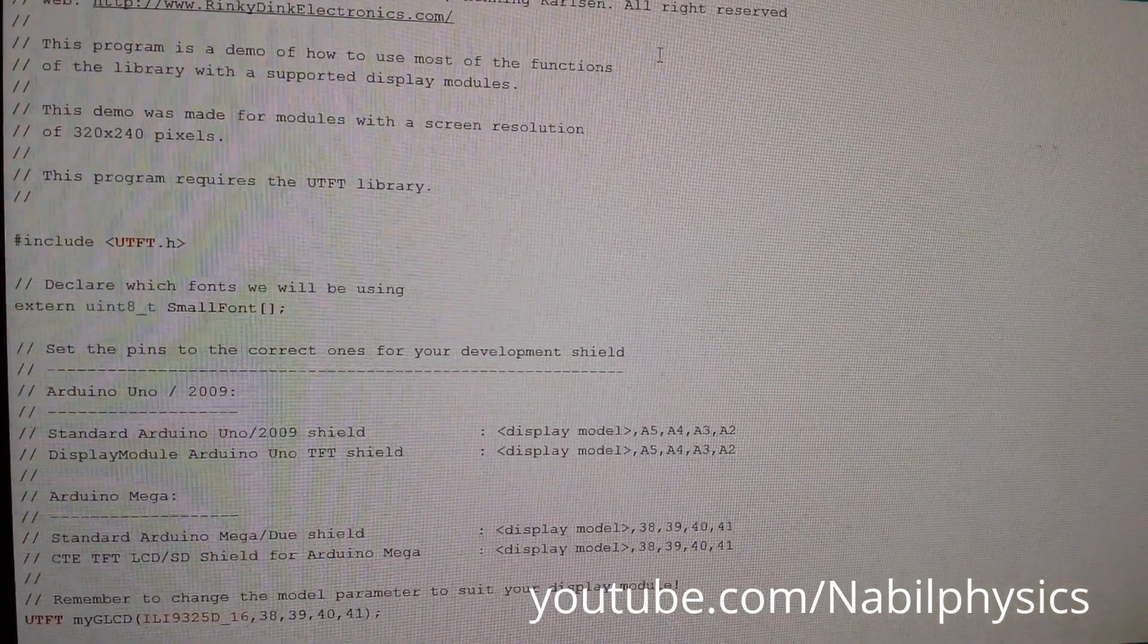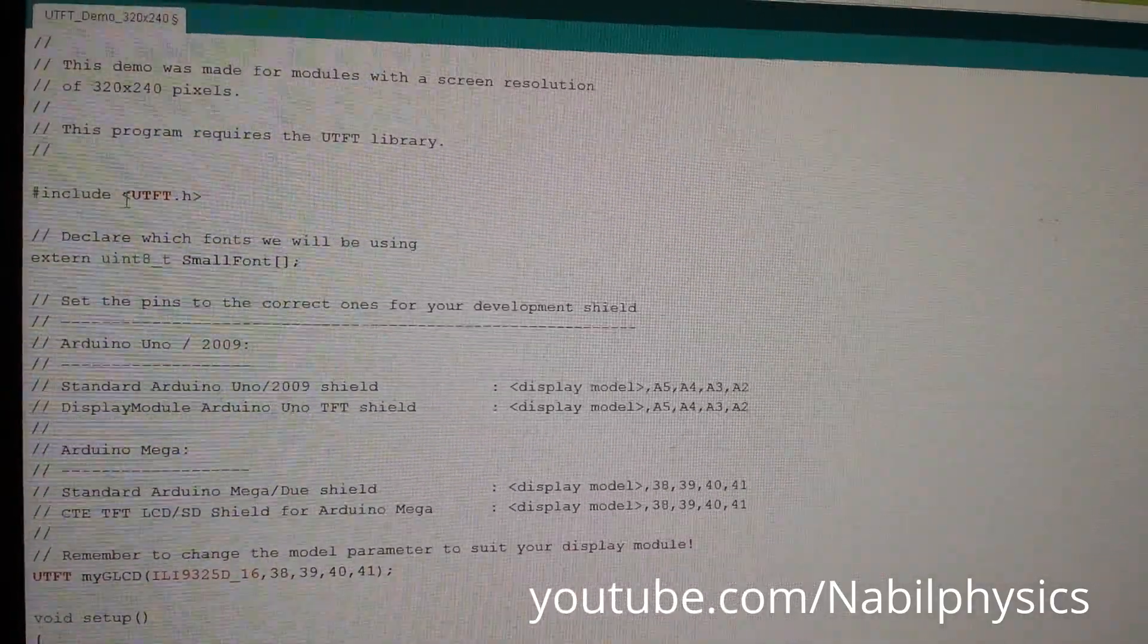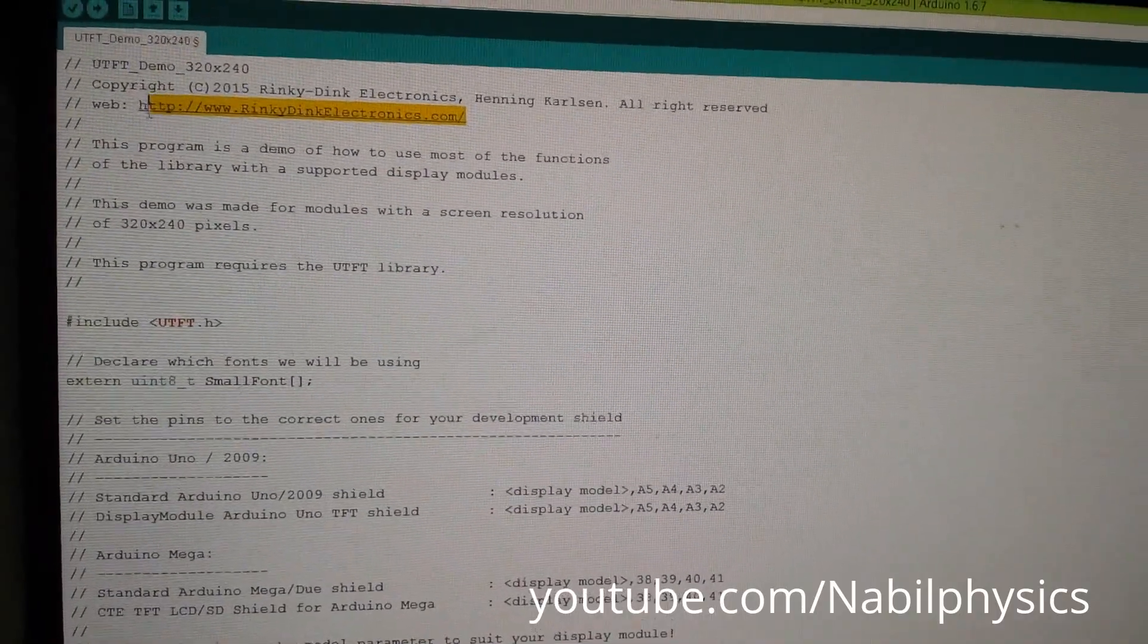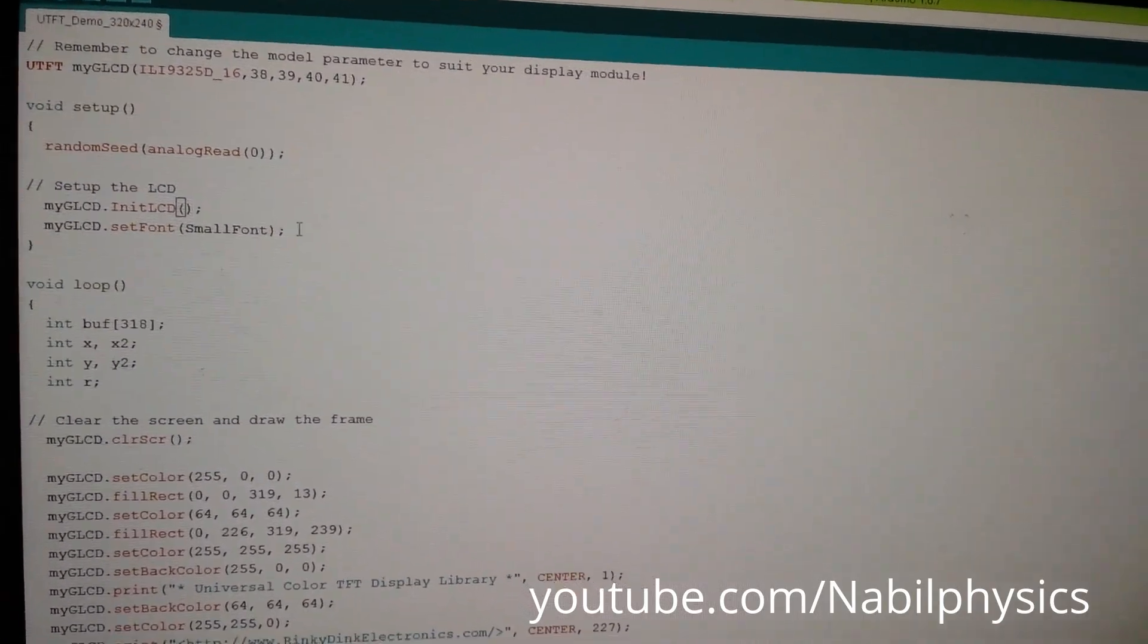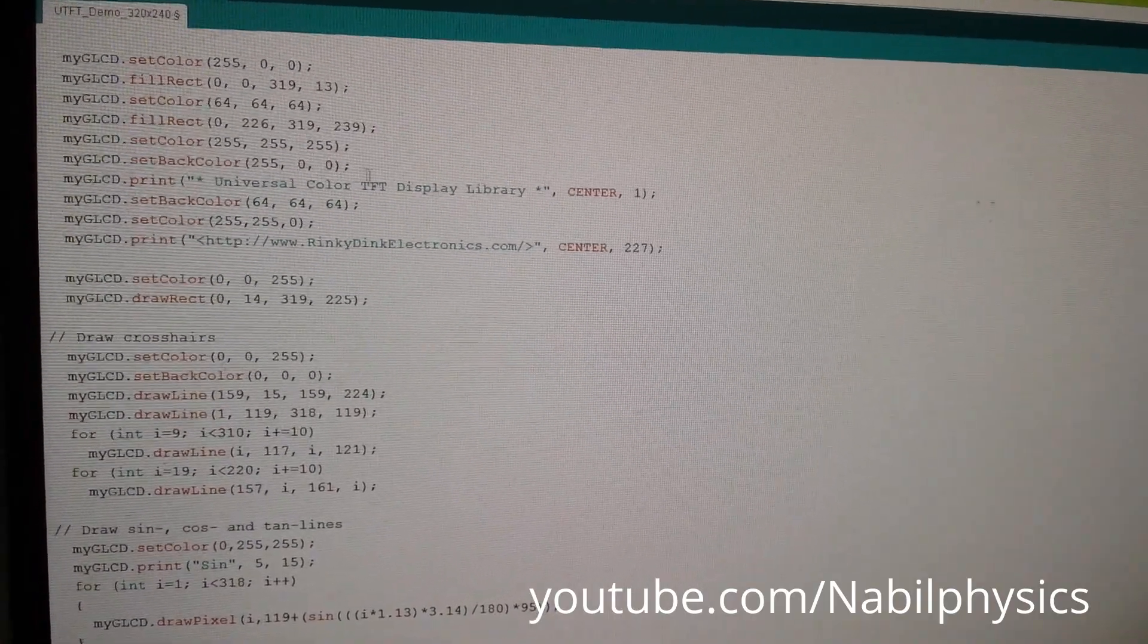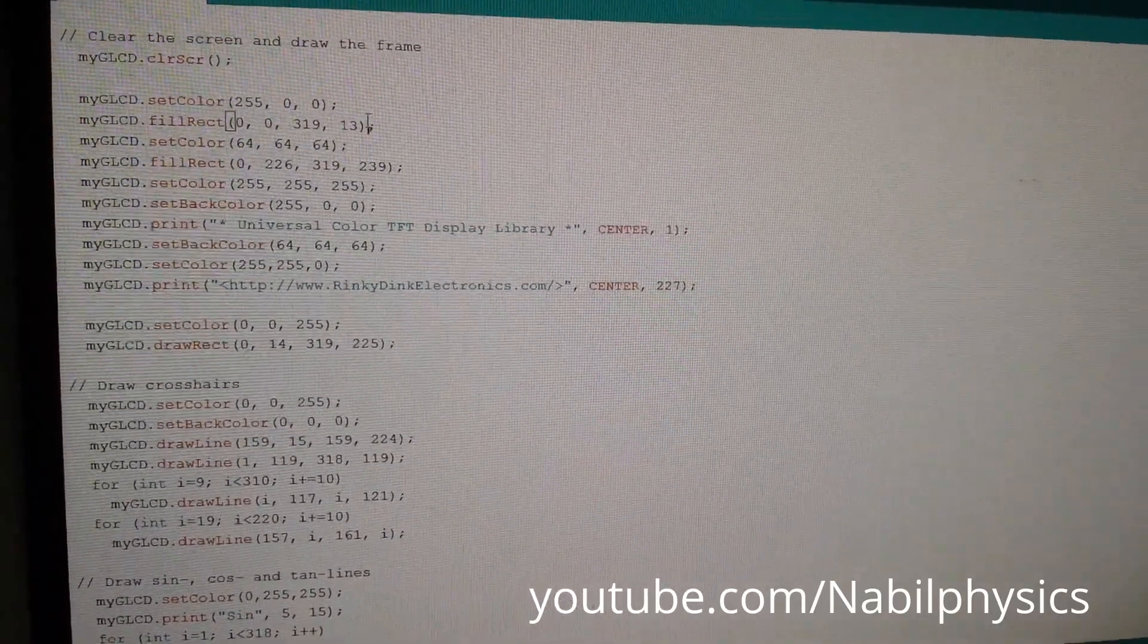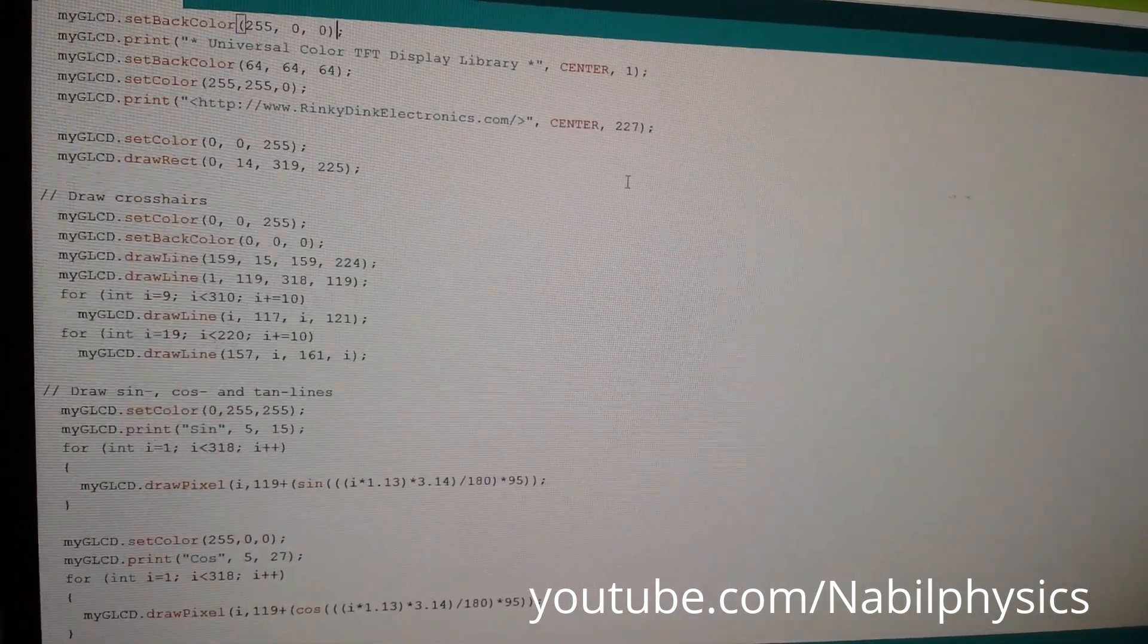That was all about the hardware part and now I am going to show you the firmware part. To run the TFT display using Arduino I have used the UTFT library. Here you can easily download this library from this website. This is a very good library especially for the beginners. Because the library defines lots of functions to make different types of shapes, lines and text. So you can easily set the text color, text size and you can make any kind of controlling software or interface in your LCD display.